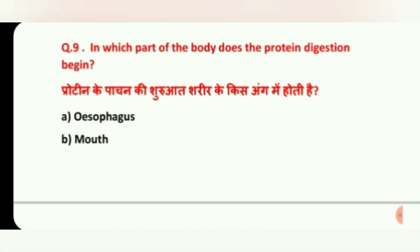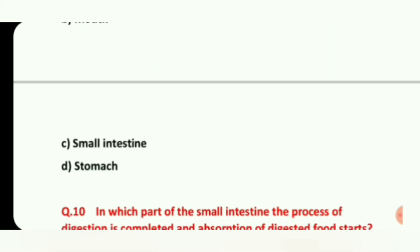Question 9: In which part of the body does protein digestion begin? Options are: Esophagus, Mouth, Small Intestine, and Stomach. The correct answer is D, Stomach.